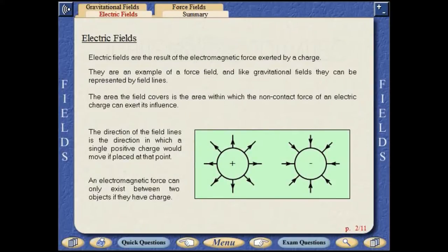Electric fields are the result of the electromagnetic force exerted by a charge. They are an example of a force field, and like gravitational fields, they can be represented by field lines.